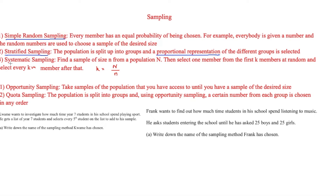The next is systematic sampling. To find a sample of size n from a population of size N, select one member from the first k members at random, then select every kth member after that, where k = N/n. For example, with a population of 300 and a desired sample size of 50, k = 6. You randomly choose one person from the first six — say person 3 — then take every sixth person after: 3, 9, 15, and so on.